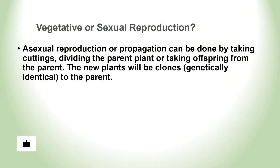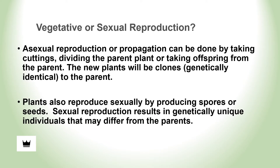Most plants can reproduce sexually and asexually, or vegetatively. Asexual reproduction or propagation can be done by taking cuttings, dividing the parent plant, or taking offspring from the parent. The new plants will be clones — genetically identical to the parent. Plants also reproduce sexually by producing spores or seeds. Sexual reproduction results in genetically unique individuals that may differ from the parents.